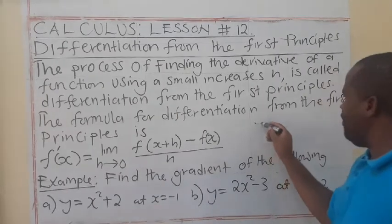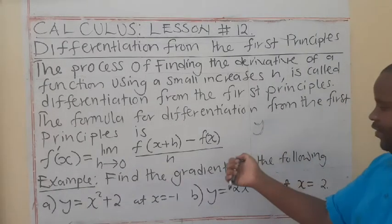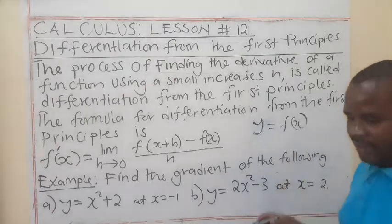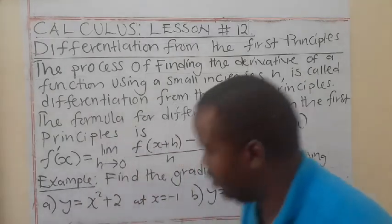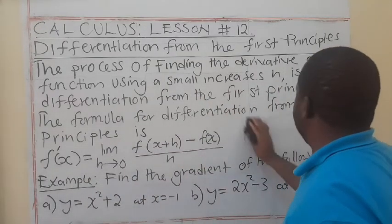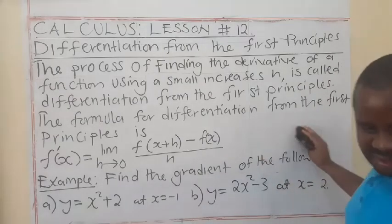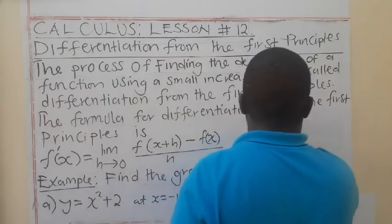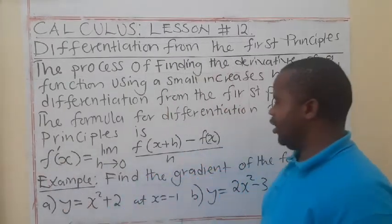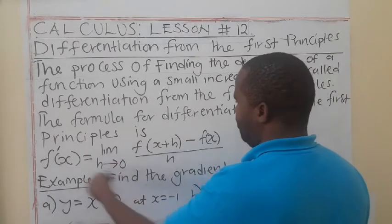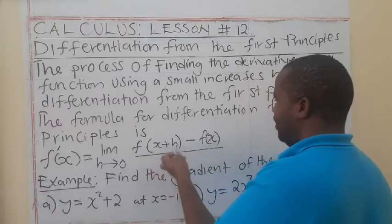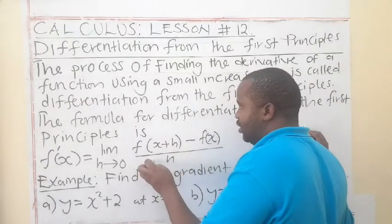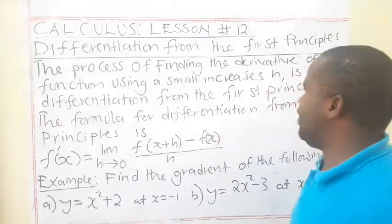If I have a function, maybe Y, where Y is equal to F of X, how do I differentiate this? I'm going to say Y prime — by Y prime, it means I'm getting the derivative. So Y prime is equal to the limit as H tends to 0 of F of X plus H minus F of X, over H. Whether I use this approach or the power rule, the answer must be the same.